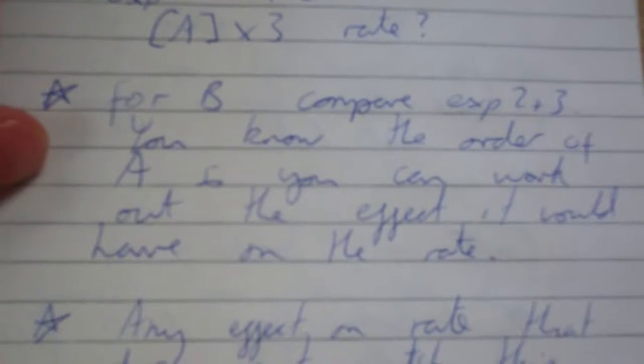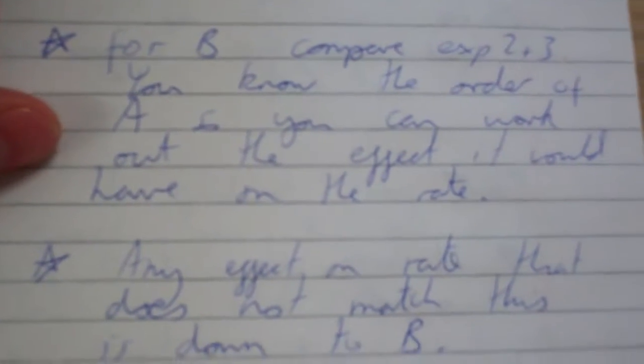B compare exponents 2 and 3. You know the order of A, so you can work out what effect that would have on the rate. Any effect greater or less than this must be down to B, so try and find the order of B from there.